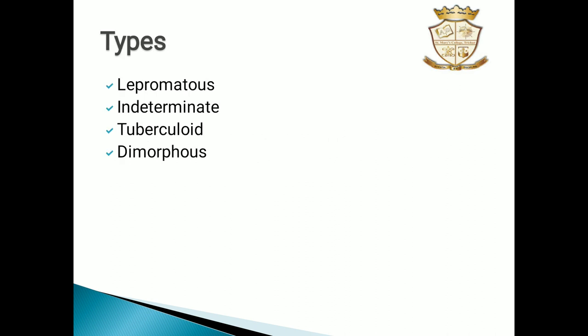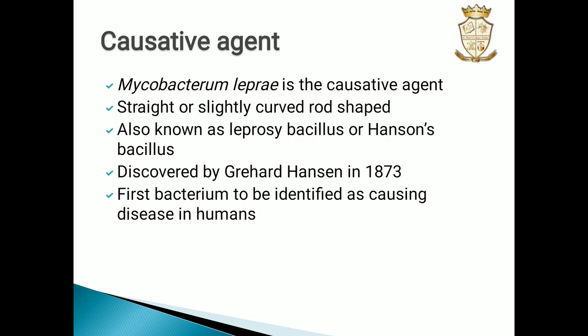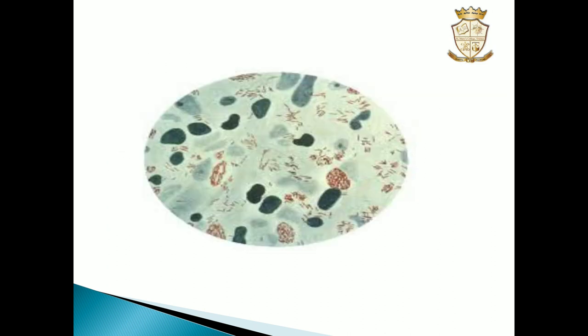There are several types, and the major four types are lepromatous, indeterminate, tuberculoid, and dimorphous. The causative agent, Mycobacterium leprae, is straight or slightly curved rod-shaped and is also known as leprosy bacillus or Hansen's bacillus. This microorganism was first discovered by Gerhard Hansen in 1873, and it was the first bacterium identified as causing disease in humans. Here you can see a microscopic view of Mycobacterium leprae.